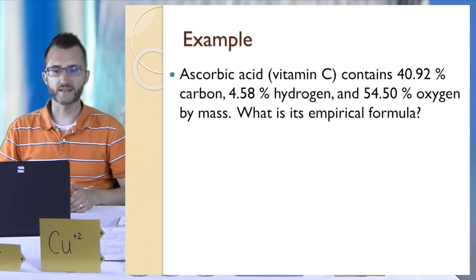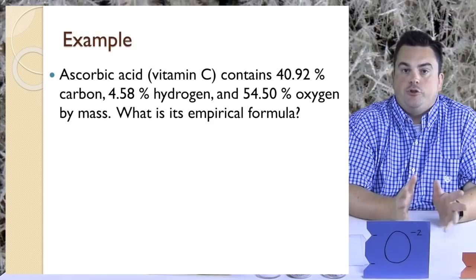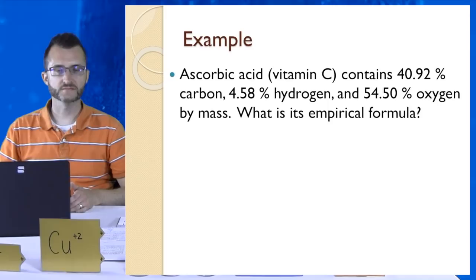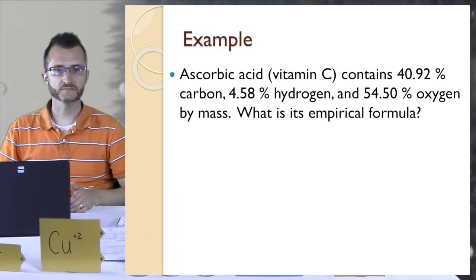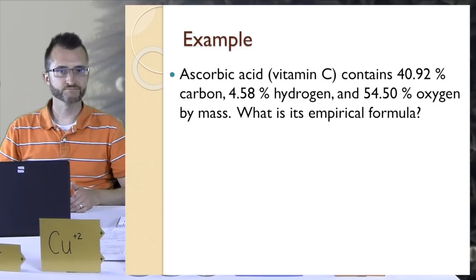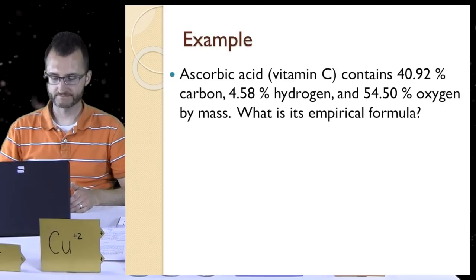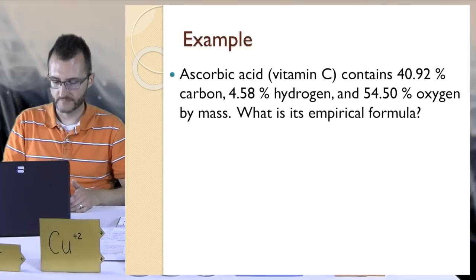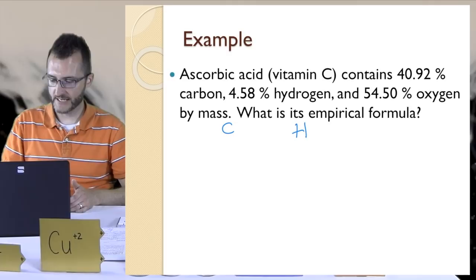We're going to do an example. Ascorbic acid, vitamin C, contains 40.92% carbon, 4.58% hydrogen, and 54.50% oxygen by mass. What is its empirical formula? There's a lot of work to do here, so please try to write small. We're going to start off by writing out the elements that we have in order: carbon, hydrogen, and oxygen.